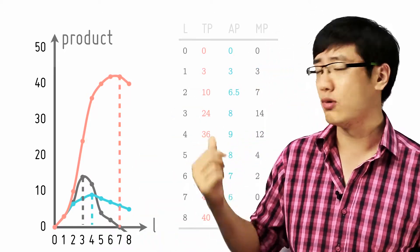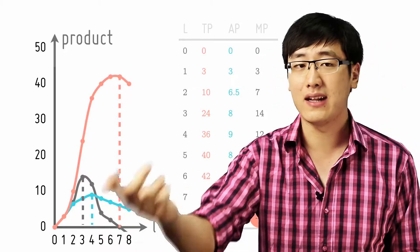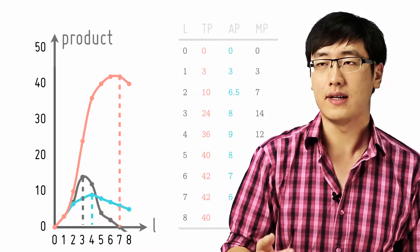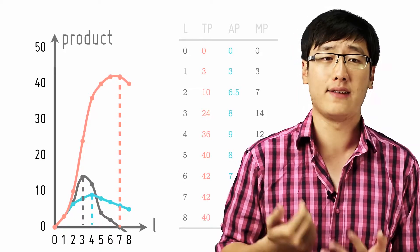Unlike the eighth worker who crowds up things and actually brings a negative number. By adding the eighth worker, it actually causes a negative 2. So the marginal product of the eighth worker is actually negative 2.